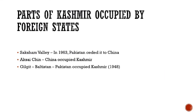Firstly, we will have a look at parts of Kashmir occupied by foreign states. The first one is the Shaksgam Valley — in 1963 Pakistan gave it to China. The second one is Aksai Chin, which China occupied, and it is known as China-occupied Kashmir.